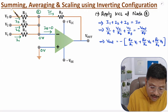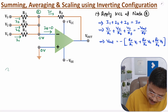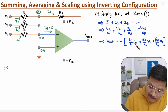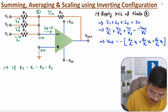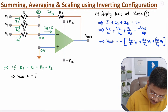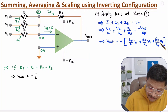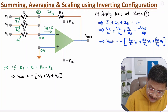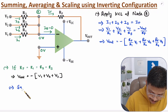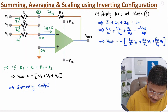For summing, we set RF = R1 = R2 = R3. In that case, RF/R1, RF/R2 and RF/R3 all equal 1 and cancel, giving Vout = −(V1 + V2 + V3). So this output is a summing output.